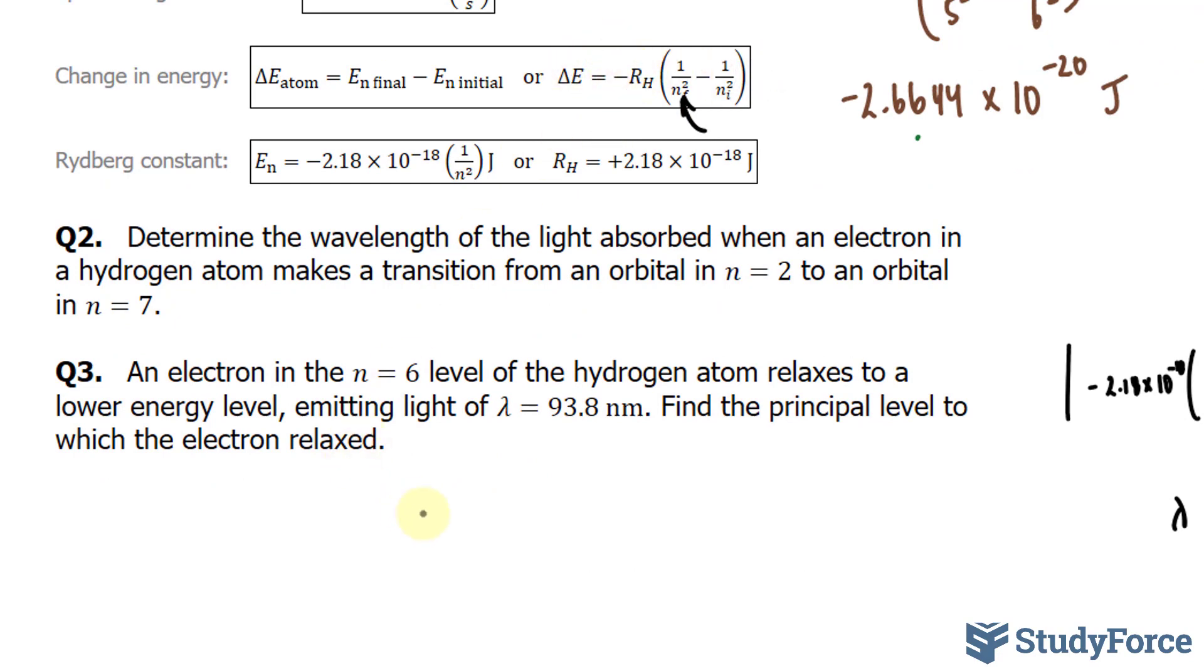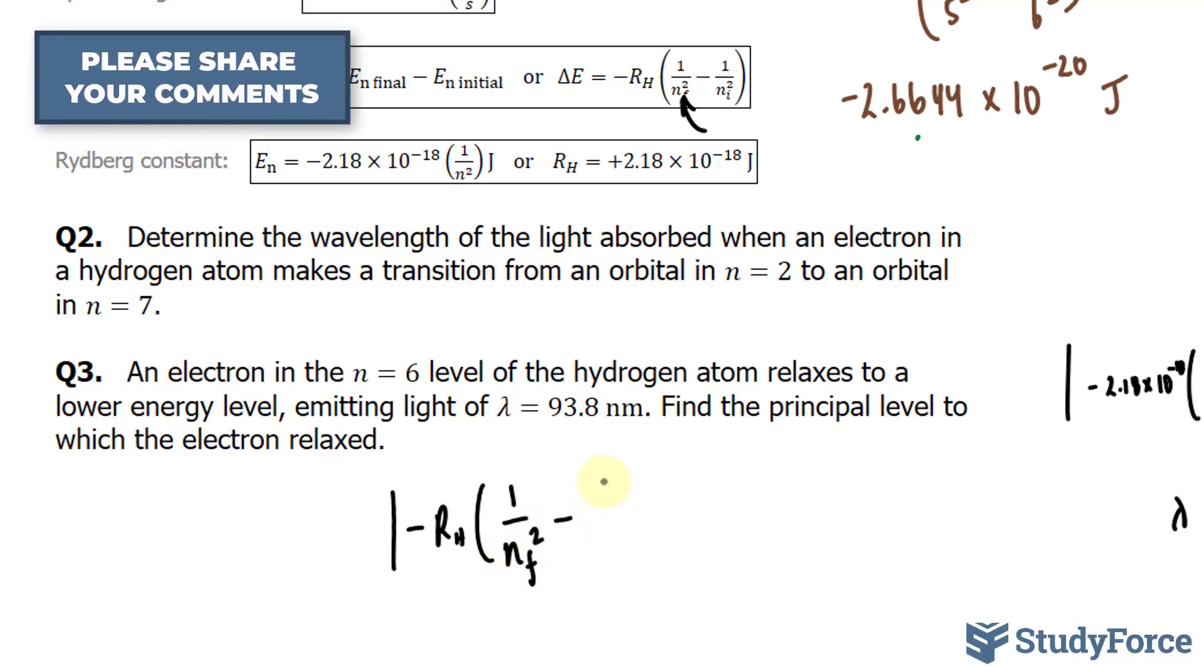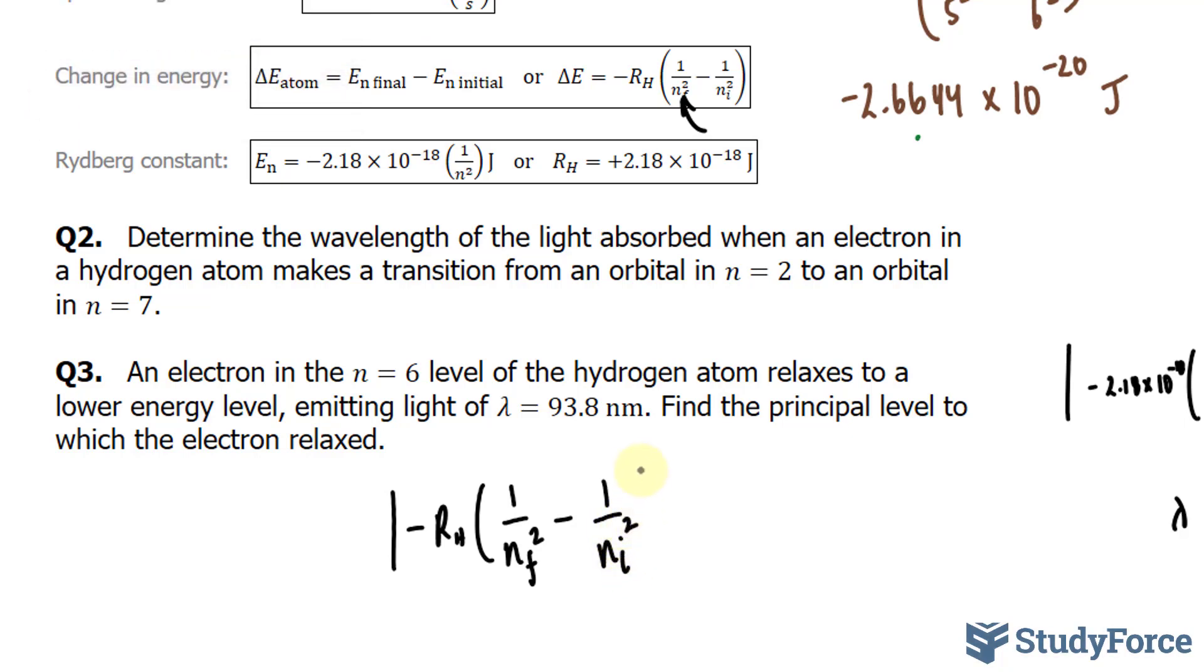That's delta E. That will be an absolute, so whatever we find, it becomes positive. I'll write down absolute r sub h bracket 1 over n final squared, that's our target, minus 1 over n initial squared. Close absolute is equal to h times c over lambda. We have the right side.